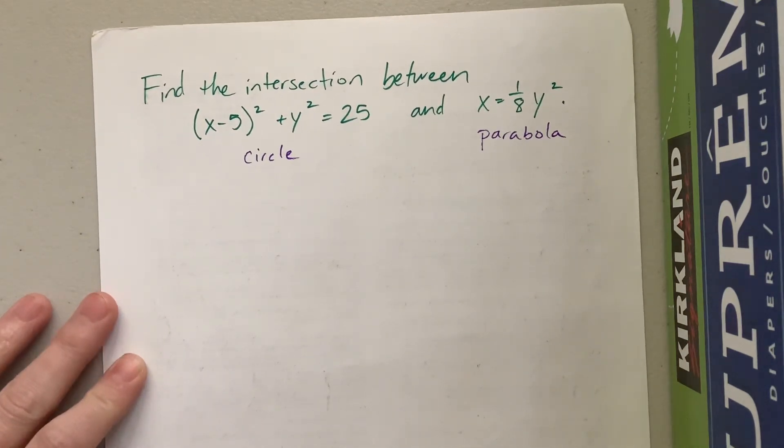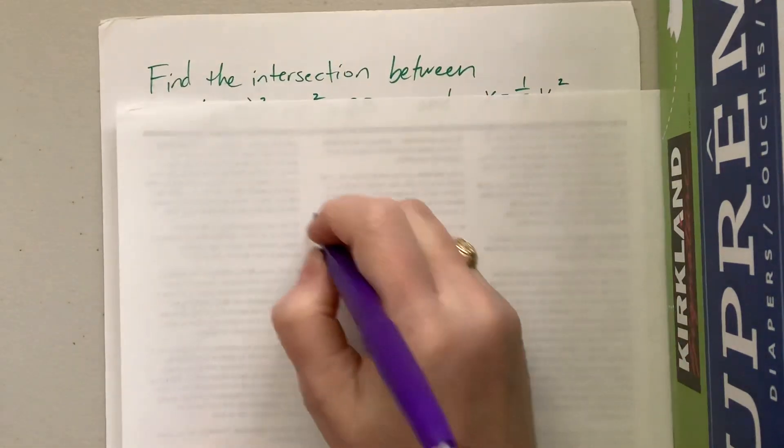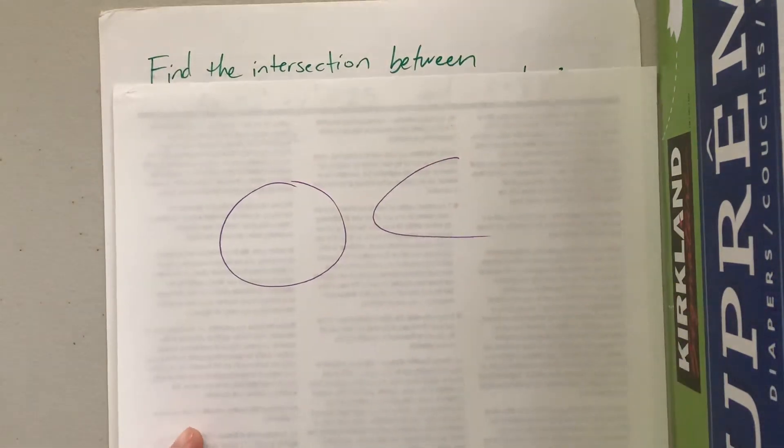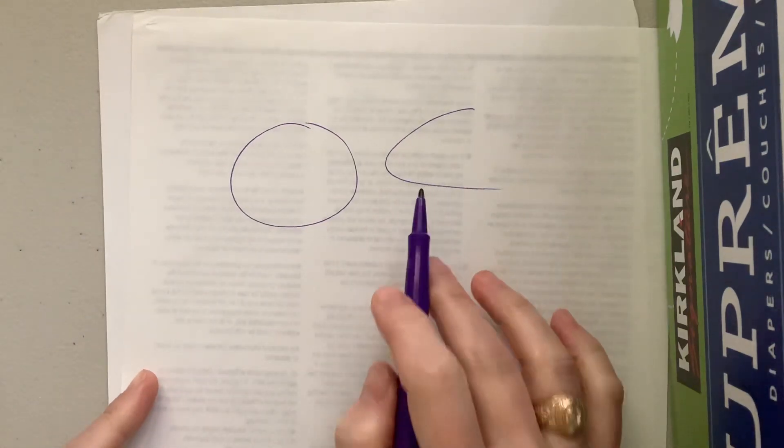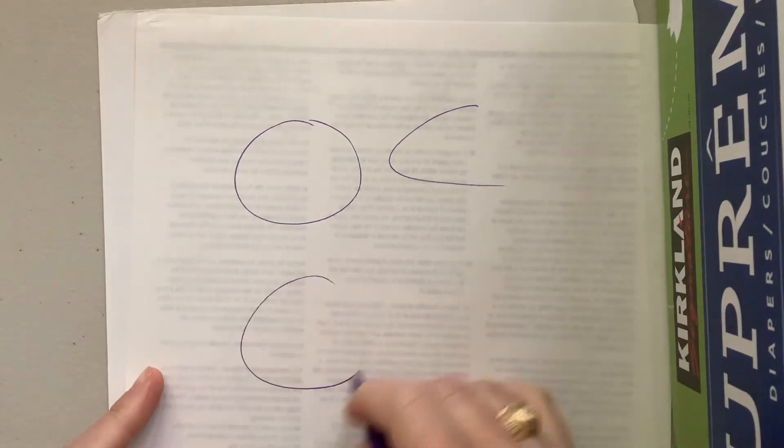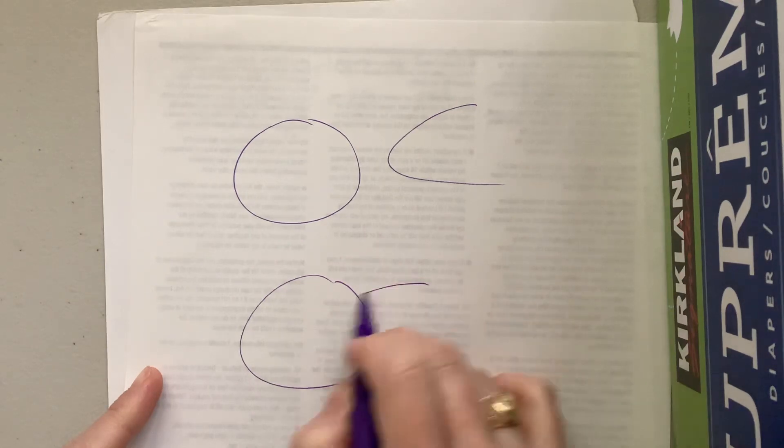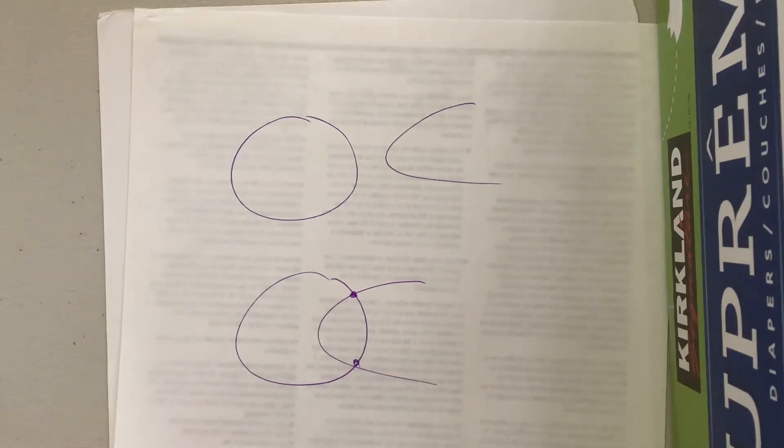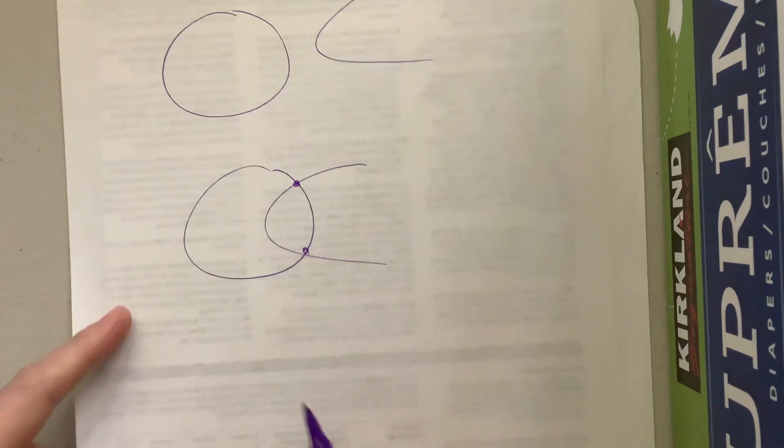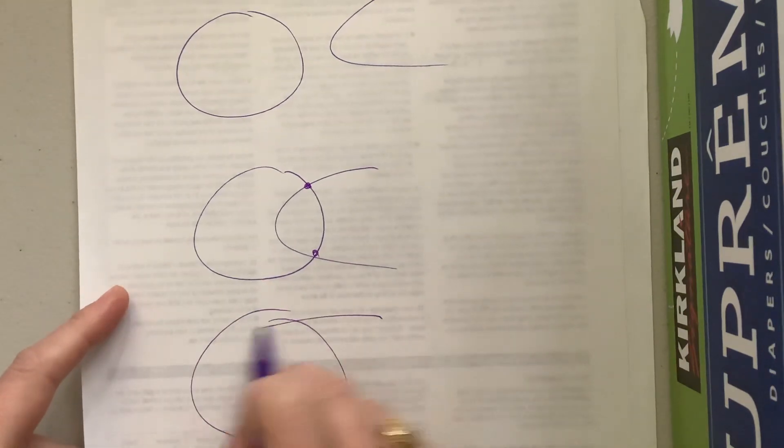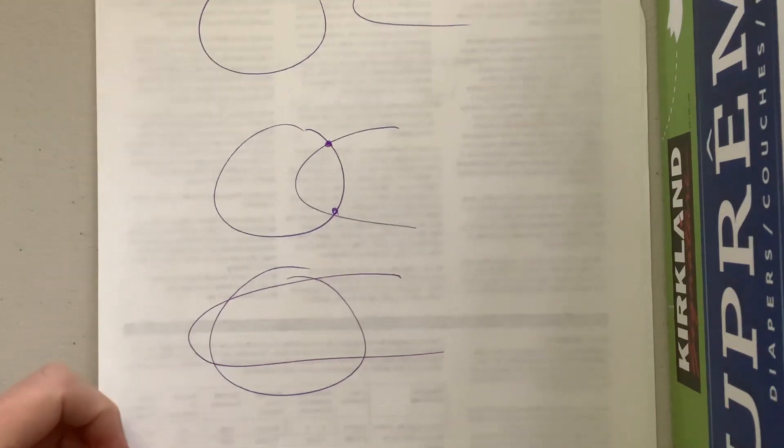Well, so different things can happen. You could have a circle where the parabola passes through it and hits in two places. You could have a situation where the circle and the parabola do something like that, where you have one, two, three, four places.